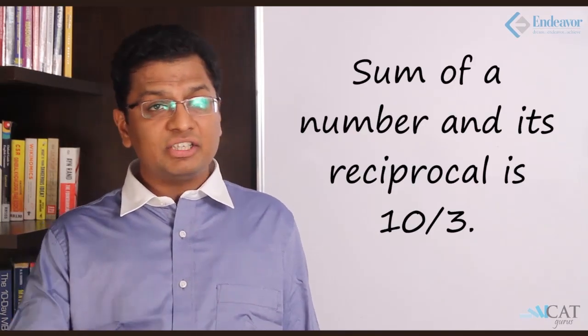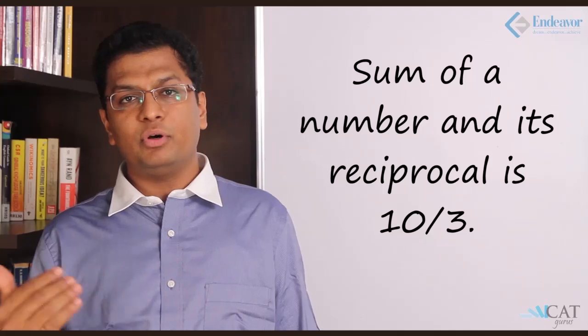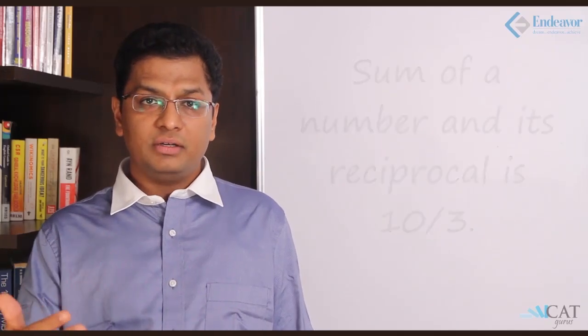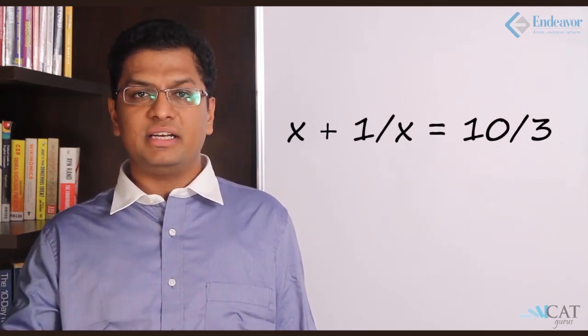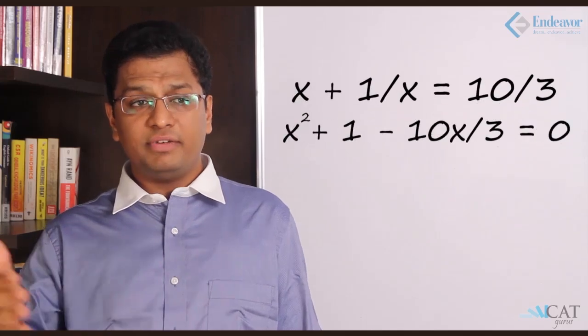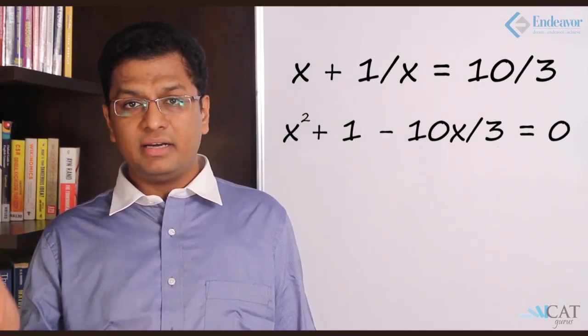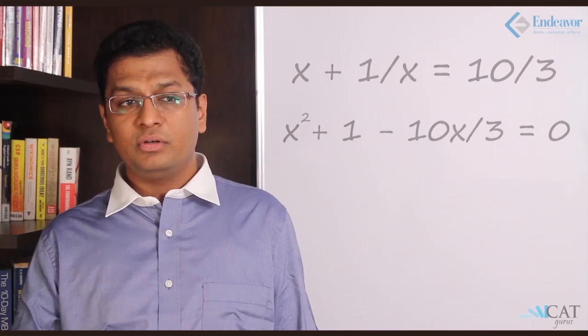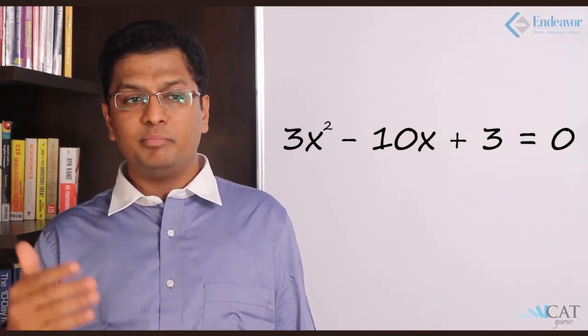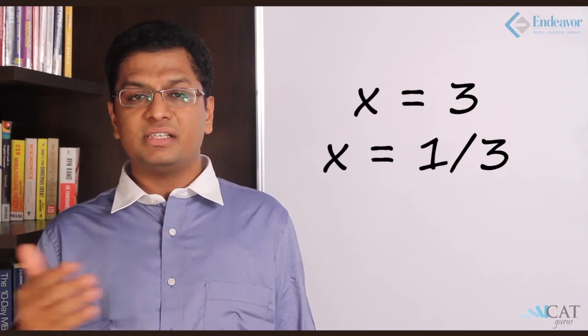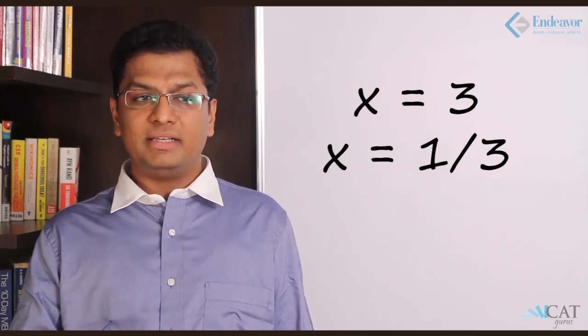Let us take another example. The sum of a number and its reciprocal is 10/3. The number is x, so its reciprocal is 1/x, and x + 1/x = 10/3. Solving: (x² + 1)/x = 10/3, which gives us 3x² - 10x + 3 = 0. This gives us x = 3 and x = 1/3.